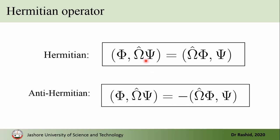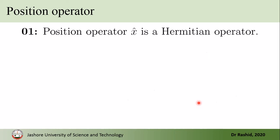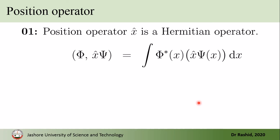With this notation, we say that a Hermitian operator follows this rule. If we have a negative sign when we take it from the second function to the first function, then we say that omega-hat is anti-Hermitian. Now we want to show that the position operator is a Hermitian operator. To do that, we evaluate this integral.